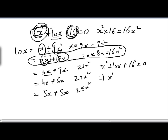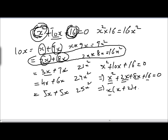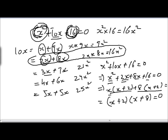So we write: x squared plus 2x plus 8x plus 16 equals 0. Now we can take x common from the first two terms — x times x is x squared and x times 2 is 2x — giving x plus 2 in brackets. Then we take 8 common from the last two terms, which also gives x plus 2 in brackets. Now we take x plus 2 common from both groups, giving x plus 8 in brackets, equal to 0.